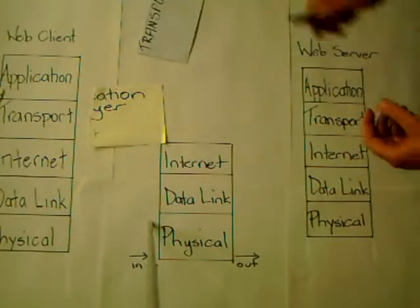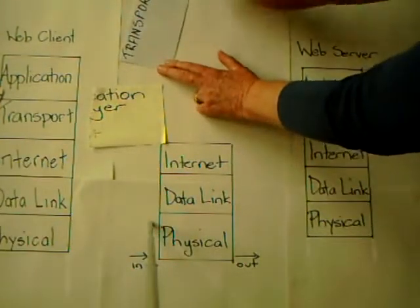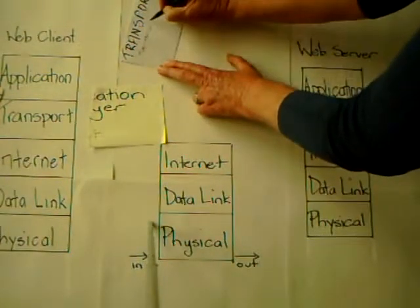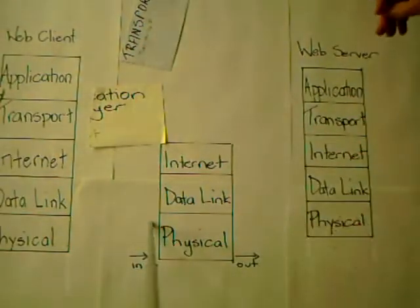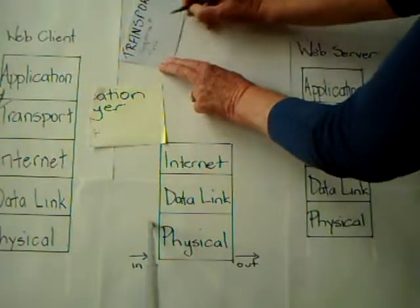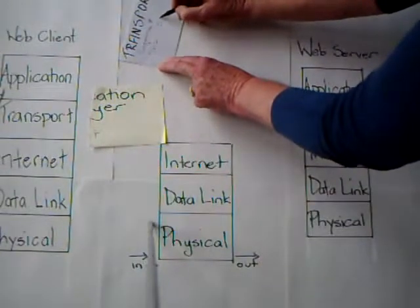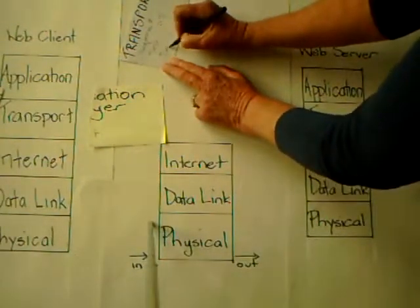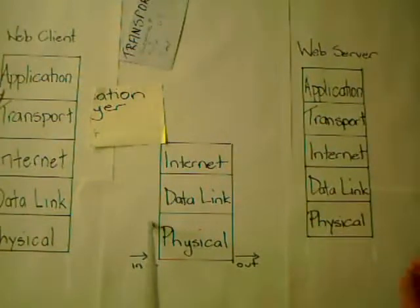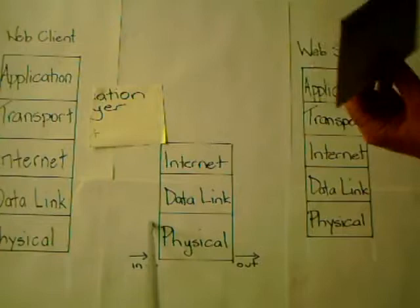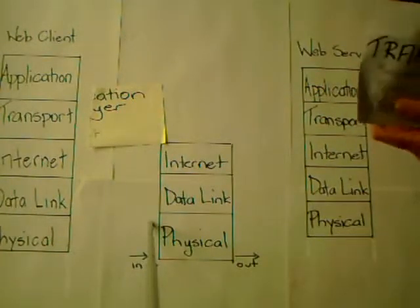These segments are going to be encapsulated at the transport layer as a TCP protocol data unit. On the TCP PDU, we have to put in the sequence number — in this case, one of two and two of two — as well as the source port, which comes from the web client, and the destination port, which is the port number for the application it's going to. Since it's going to a web server, it will be port 80.